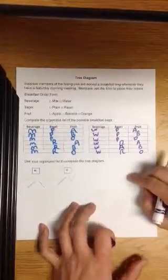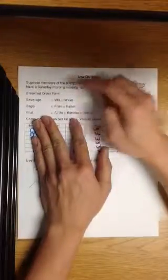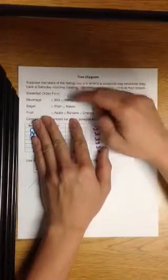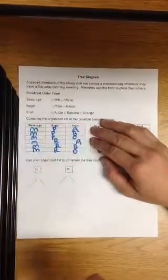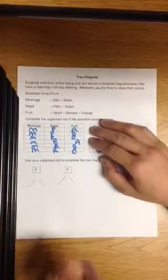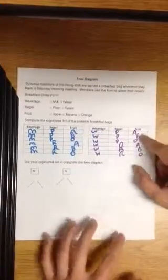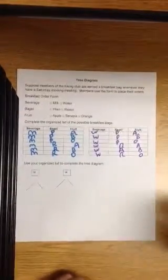So this is a very organized list. Because some people would just, without making an organized list, would just guess. Milk, raisin banana. Milk, plain orange. Then they'll leave some out. So that's why it's very important to create a systematic or very organized list so you can get every single possible combination.